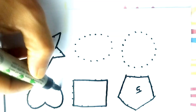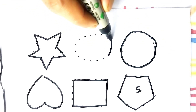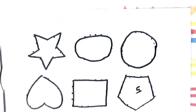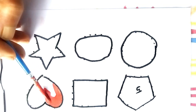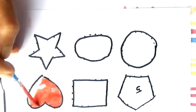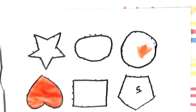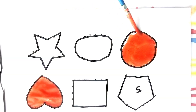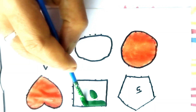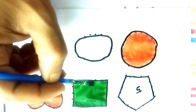Heart shape — this is a heart shape. This is a circle. This is an oval shape. Red color heart shape — I am filling the heart with red color. Red color circle — I am filling the circle with red color. This is green color — green color rectangle, green color rectangle.